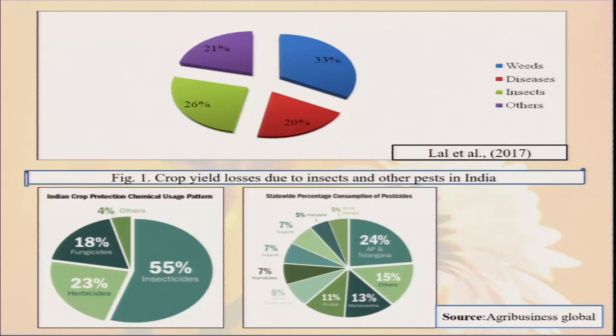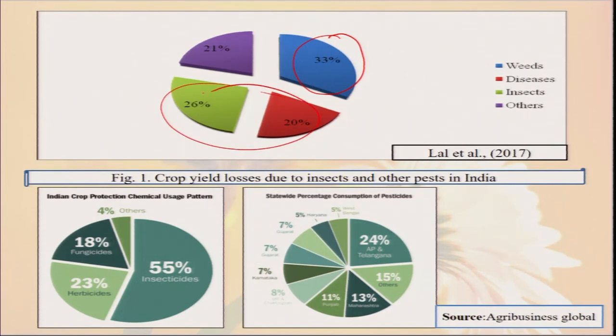After weeds, pests and diseases give the maximum loss. If you combine diseases and insects, it is more than 46 percent. So a huge amount of crop loss is being caused. Sometimes, if we cannot control insect pests or diseases, there may be a chance of total crop failure. We have seen different types of such examples in our human history.